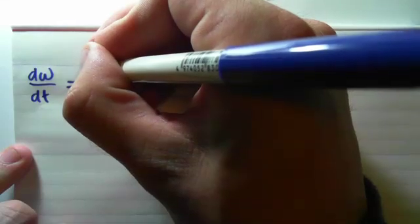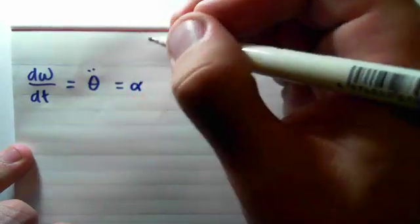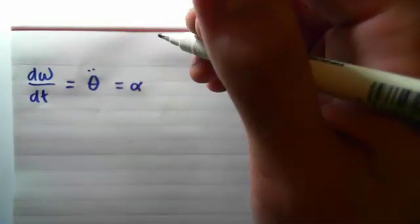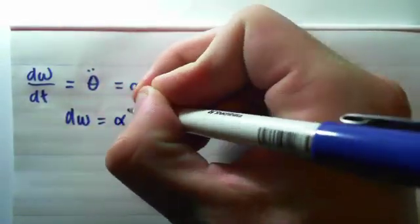First of all, we'll start off with our relation between the time derivative of angular velocity. That is, dω/dt, which is equivalent to θ̇ (theta dot), θ̈ (theta double dot), is equal to alpha. We'll use separation of variables, so dω equals α dt.